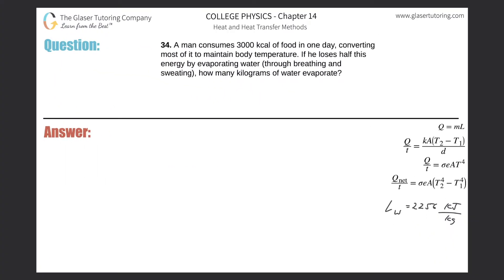Number 34. A man consumes 3,000 kilocalories of food in one day, converting most of it to maintain body temperature. If he loses half this energy by evaporating water through breathing and sweating, how many kilograms of water evaporate?